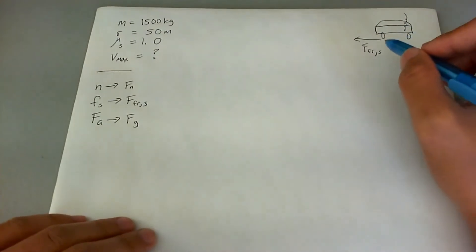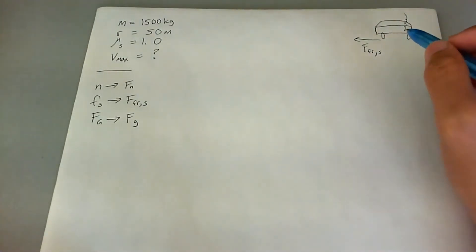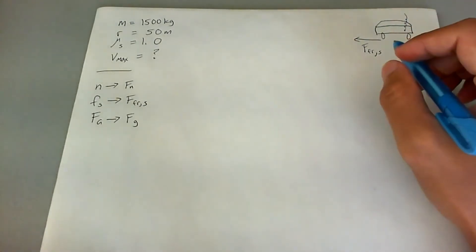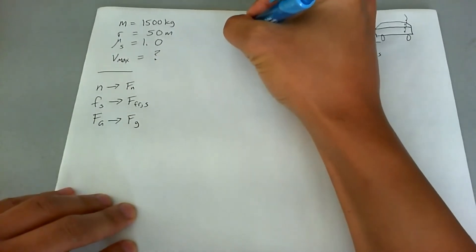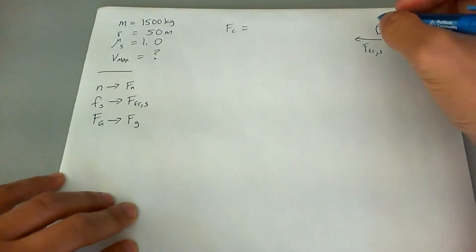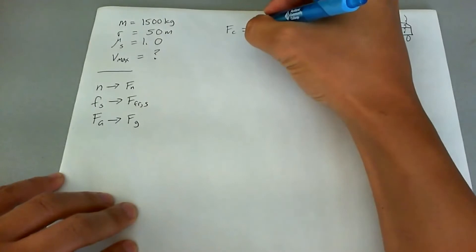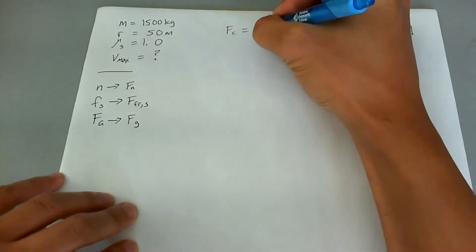Basically, they're asking what's the maximum speed until the static friction force breaks and the car starts to skid. So first of all, we can say that centripetal force equation, and we'll just write that down because we know that this is a centripetal force problem, is mv squared over r.